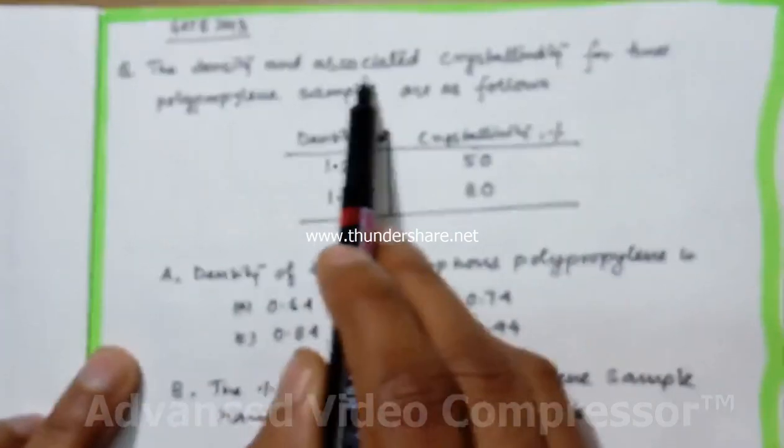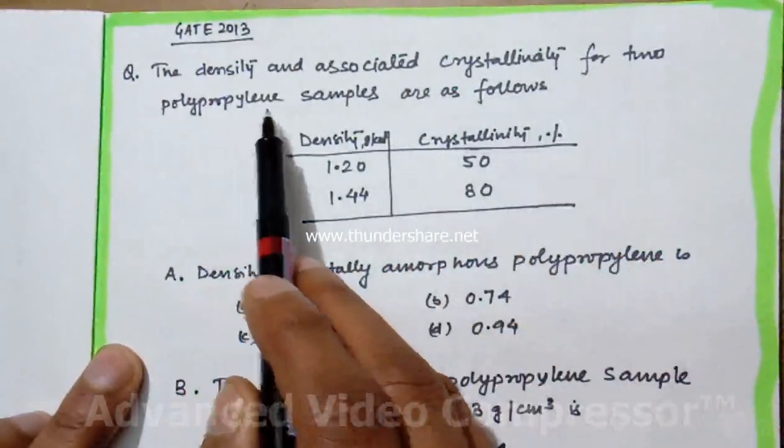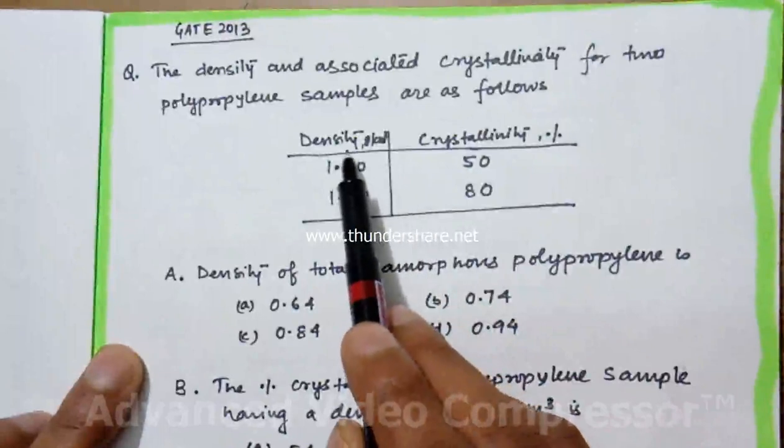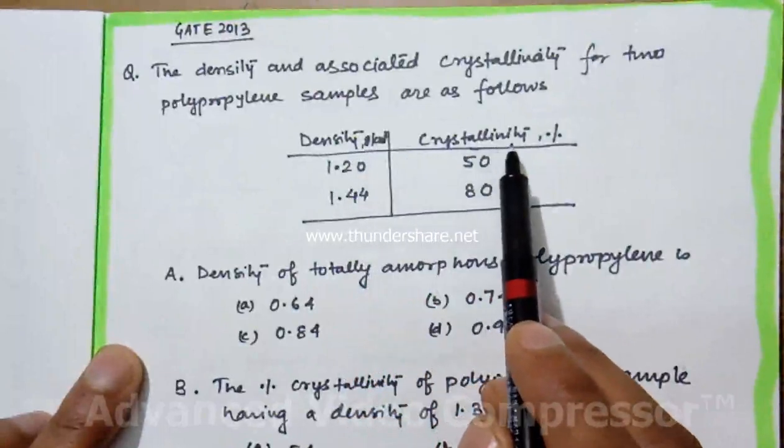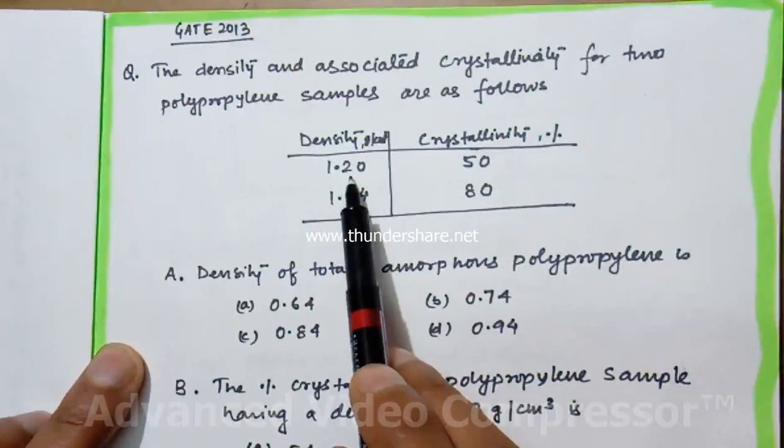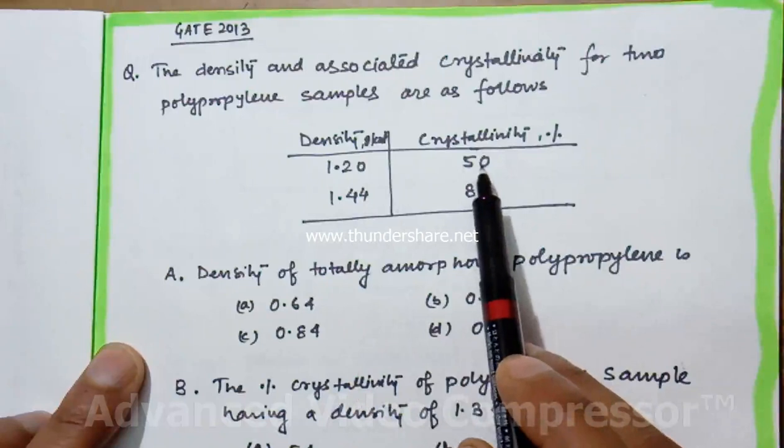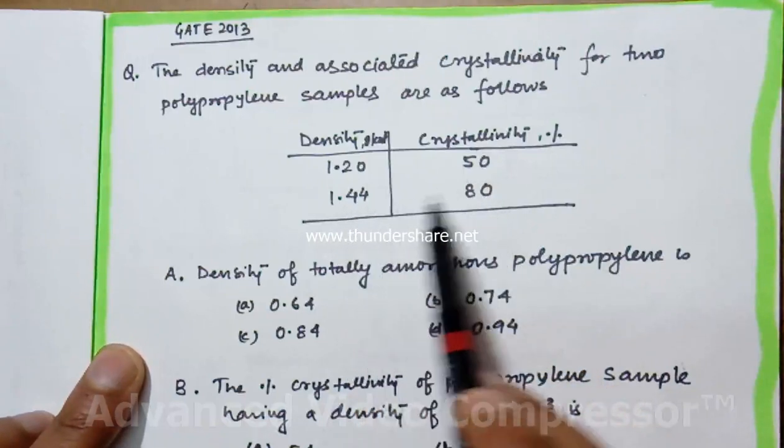The density and associated crystallinity for two polypropylene samples are as follows. Density is given in gram per centimeter cube and percentage crystallinity. For density 1.2, it is 50%. For density 1.44, it is 80%.